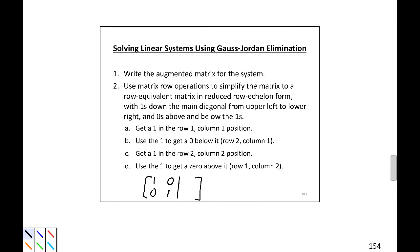Now we're going to solve systems using what is called Gauss-Jordan elimination, which begins with writing the augmented matrix for the system. Second, we use matrix row operations to simplify the matrix to a row equivalent matrix in reduced row echelon form, with 1s down the main diagonal from upper left to lower right, and 0s above and below those 1s. The process we are going to follow is: first, get a 1 in the upper left — the row 1, column 1 position. Then we will use that 1 to get a 0 below it in row 2 column 1. Next, we'll get a 1 in row 2 column 2, and then use that 1 to get a 0 above it in row 1 column 2. Applying those operations to the entire row will give us something in the form we can use to determine the solution.